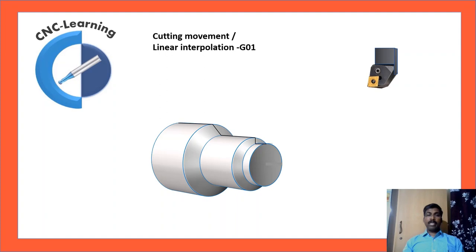Cutting movement, linear interpolation, that is G01. First tool will be positioned in rapid traverse. And the linear cutting motions will happen in G01.